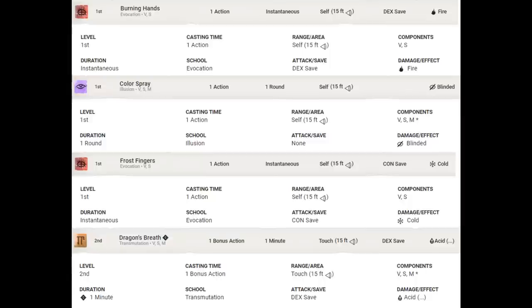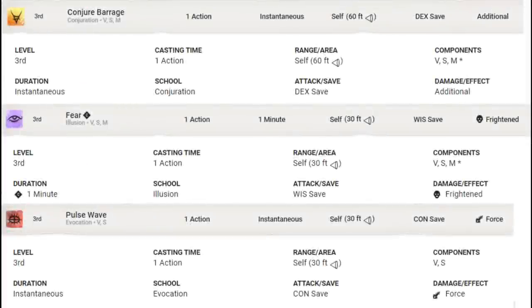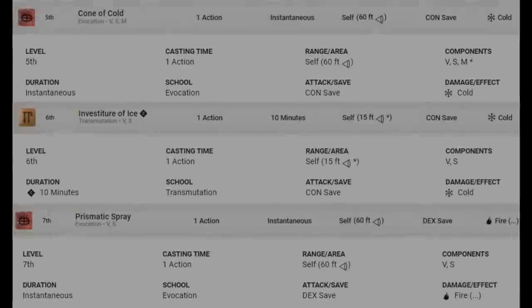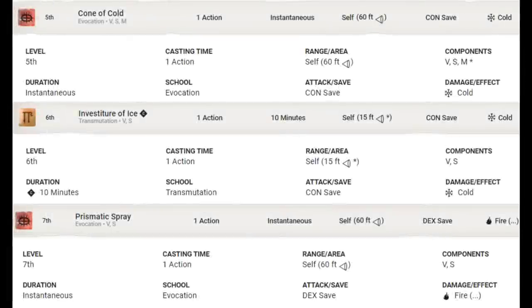Frostfingers is a 15-foot cone, first-level spell. Then we get to second-level spells, and there's Dragon's Breath, 15 feet, and Conjure Barrage is a ranger spell, 60-foot cone. That's a third-level spell. Fear is a 30-foot cone, third-level spell, and Pulse Wave is a 30-foot cone, third-level spell. Then we jump to fifth-level spells. There's Cone of Cold, which is 60 feet, and Investiture of Ice is sixth-level and gives you an action to make a 15-foot cone, and then Prismatic Spray is a 60-foot cone at seventh-level.